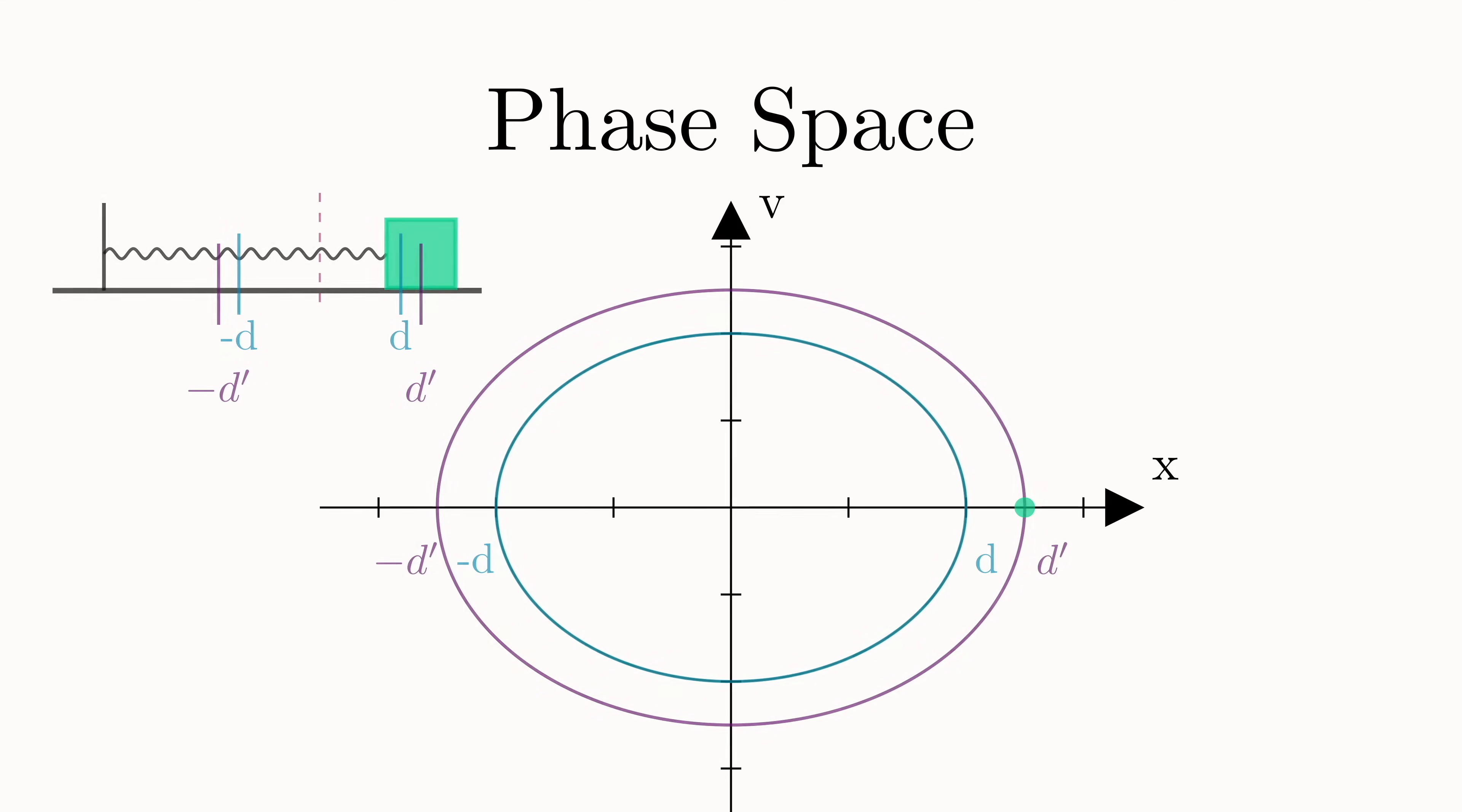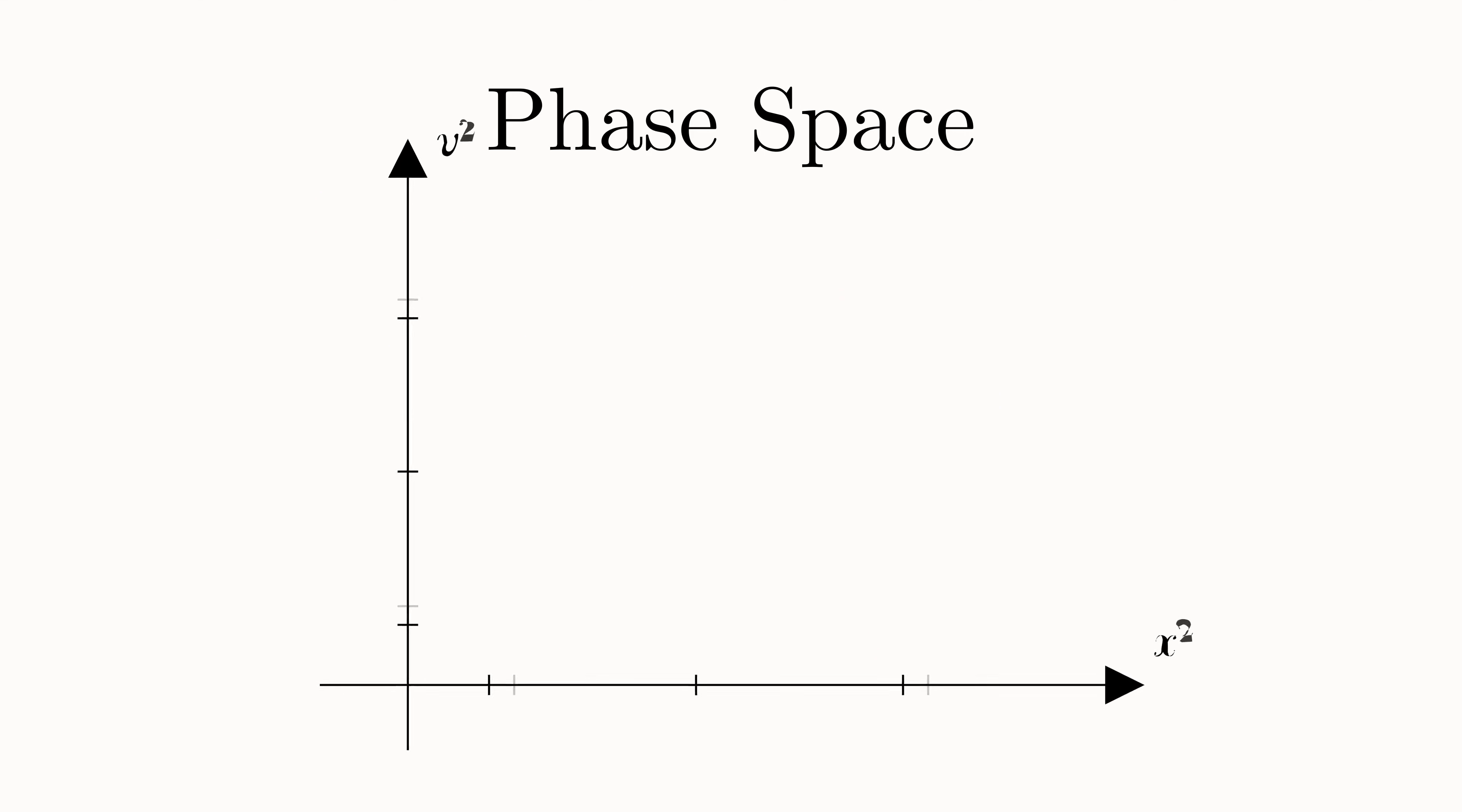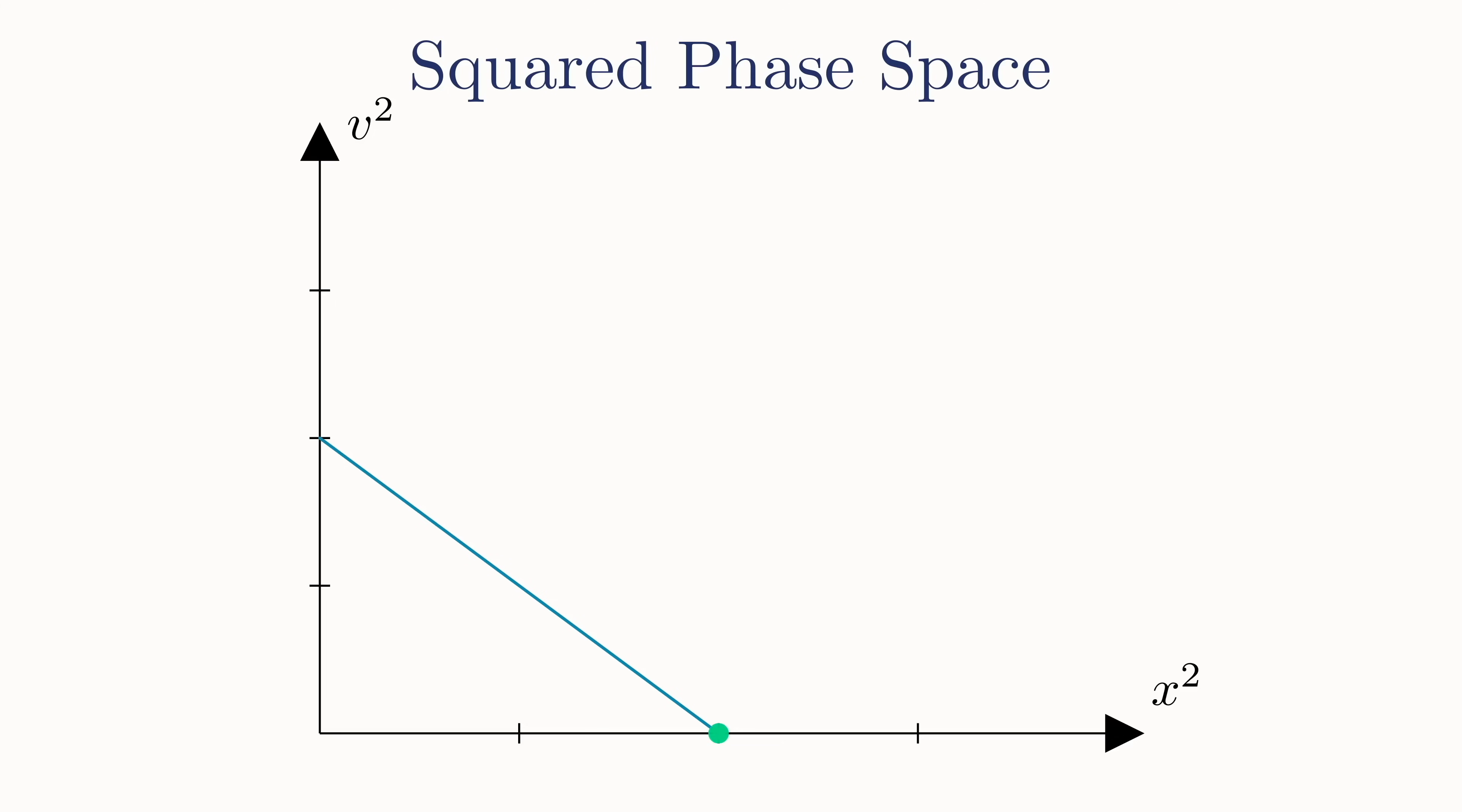First, we'll move over to squared phase space. Instead of using position and velocity for axes, let's take position squared and velocity squared. The motion now becomes a straight line. In order to make connection with the Lagrangian, as well as to make our calculations even more clean, we'll scale our axes and change the x-axis to be potential energy and the y-axis to be kinetic energy.